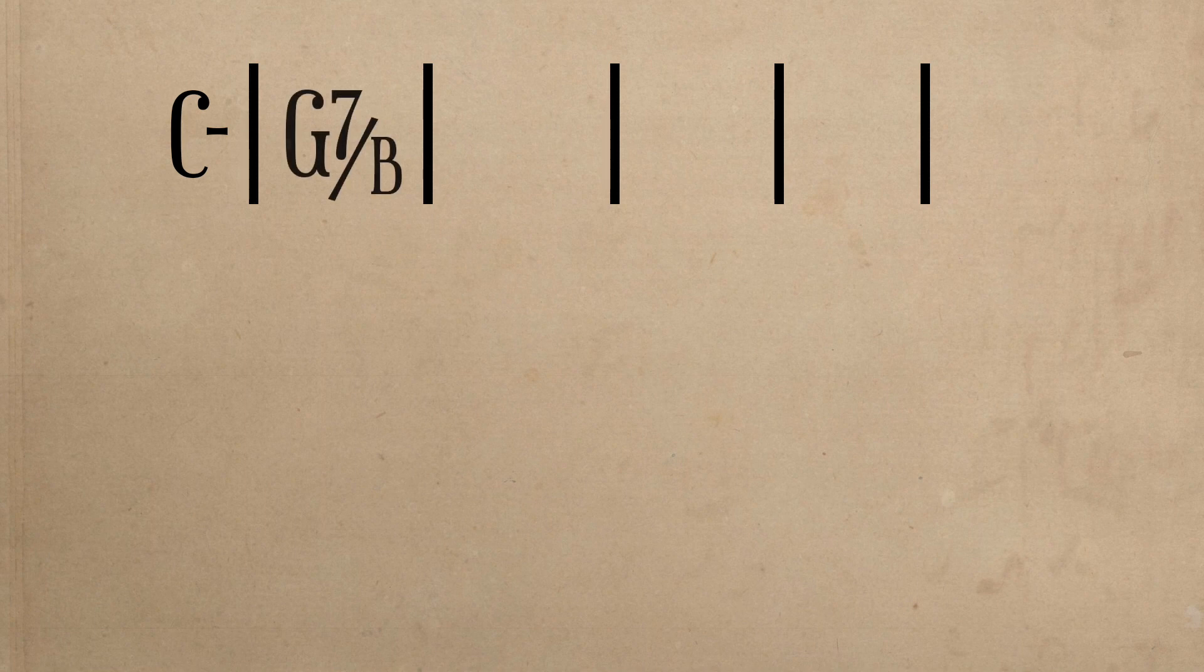The theme is set in the tonality of C, with its mode being minor. In the first six measures, we have, harmonically, C minor, the 1, G7 over B, the 565,